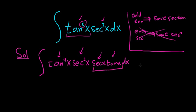So we saved a secant tangent. So that means that our u is going to be secant x. And the reason is because du is then secant x, tangent x, dx.